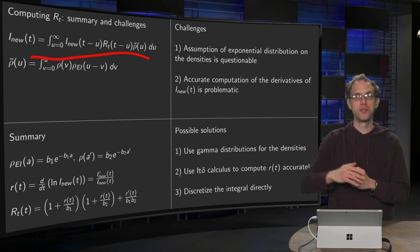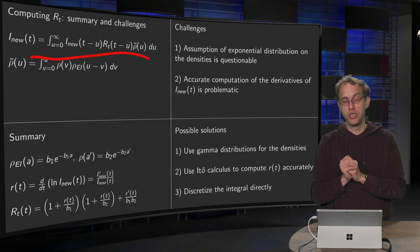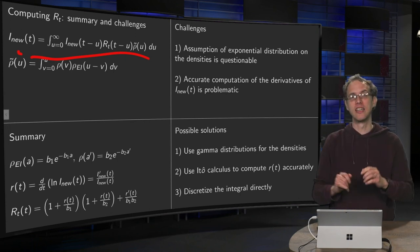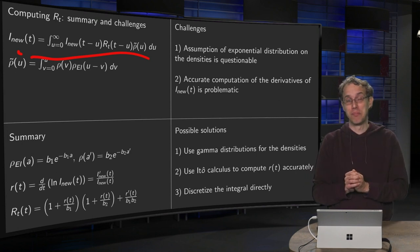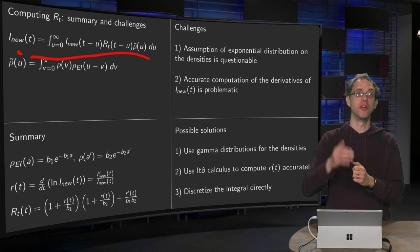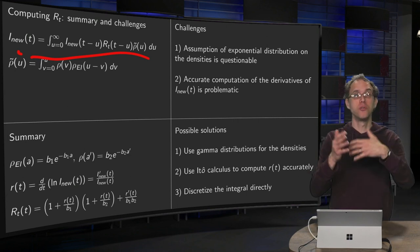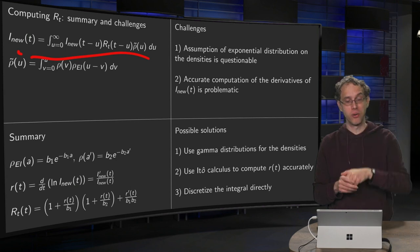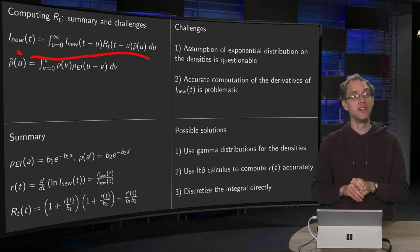That gives you R(t) on different points times some matrix which contains I_new's and rhos. So discretize this and the right-hand side. Then you basically get a problem of the form Ax = b, where the matrix A is known and where the b contains I_new's also known. And then your x's contain all your R_t's. So that might be an even better solution.